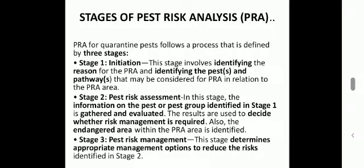Stages of PRA in short: Stage one, initiation — identify why to conduct PRA, identify the pest and pathway. Stage two, pest risk assessment — the information gathered and the pest identified in stage one are evaluated and the risk is decided. Stage three, pest risk management — the pest risks identified in stage two are considered and the appropriate management options are determined.